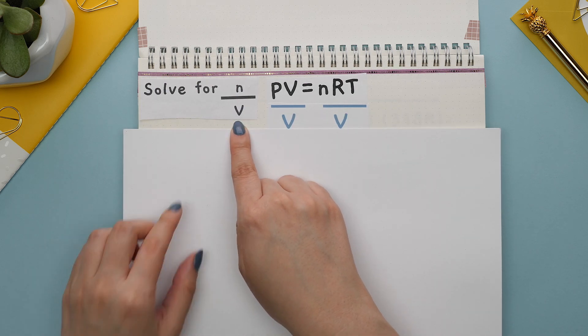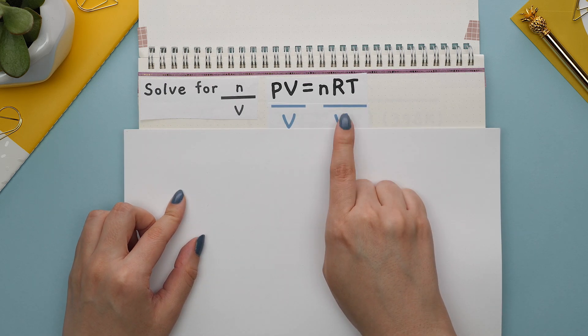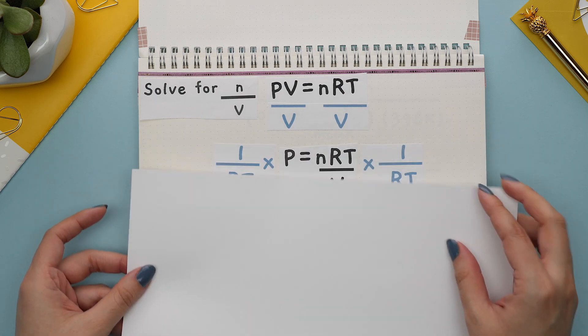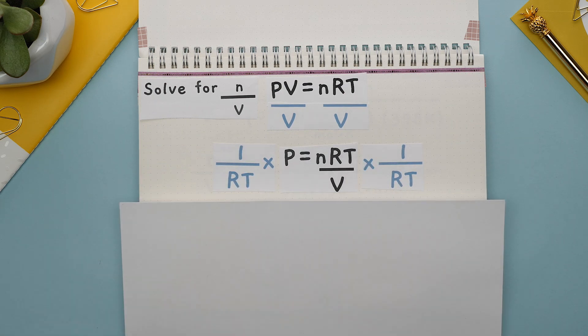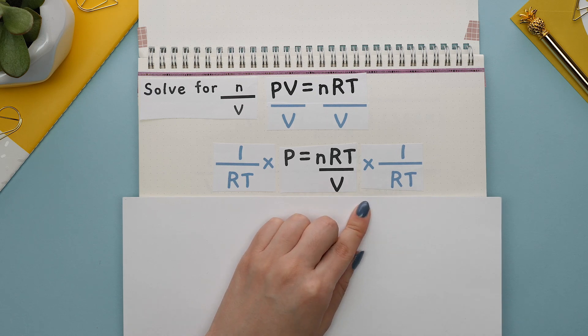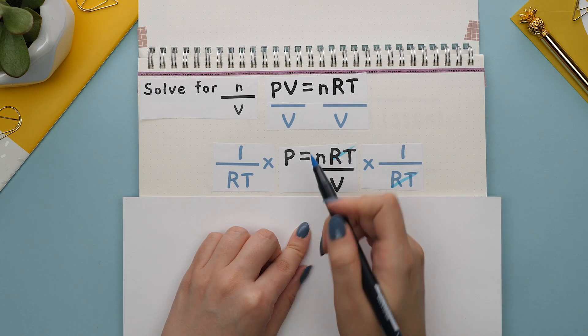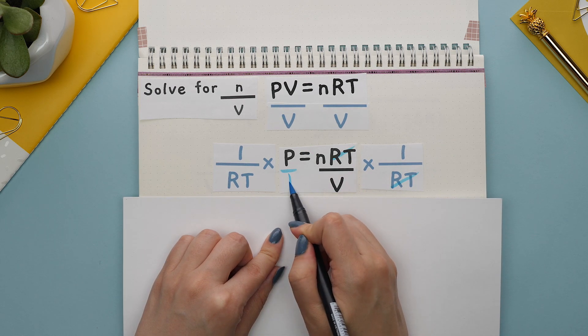To do this we will start by dividing both sides by V. Next we can multiply by the reciprocal of RT to both sides. This is the same as dividing by RT.